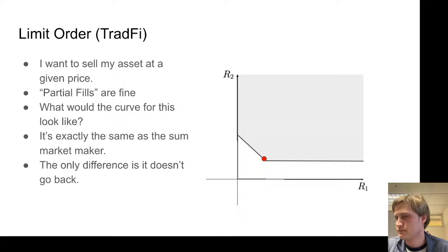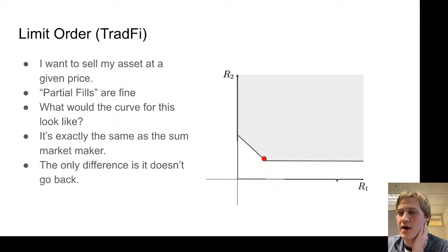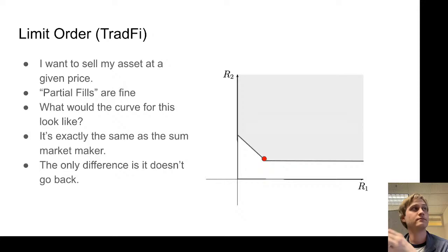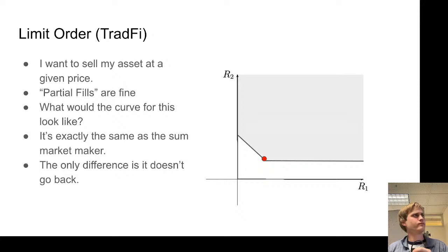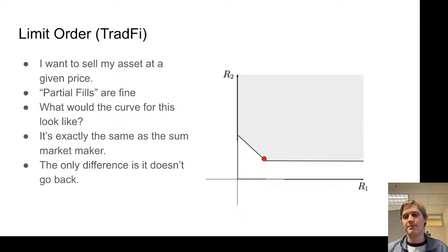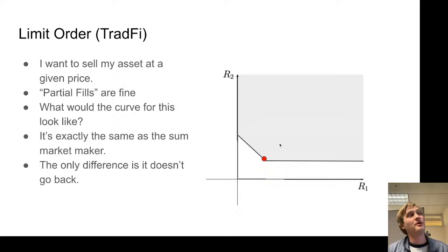R1 and R2 represent the reserve amounts. This is basically a two-dimensional chart where every point shows a certain amount of R1 and R2 that the smart contract could hold at any given time. The boundary represents all the possible trades you could make. It has a time-varying character: as you move towards one thing, you want to stop being able to go back. This is a sequence of time — it starts like this, proceeds to a middle state, and could go further where the red dot is all the way up at the top.